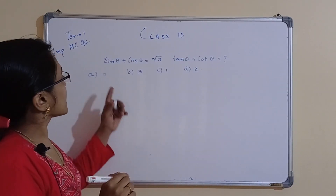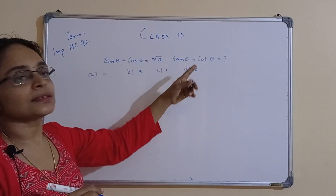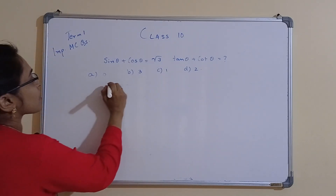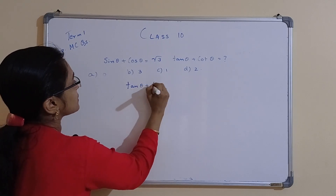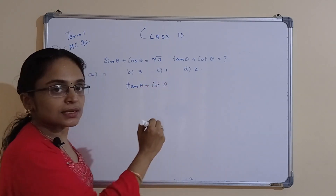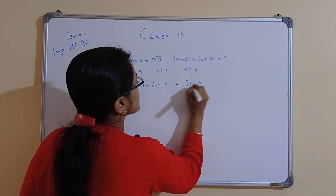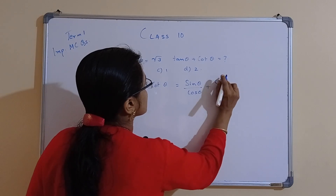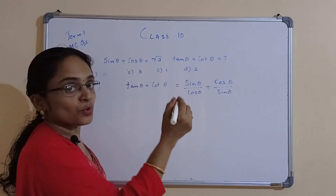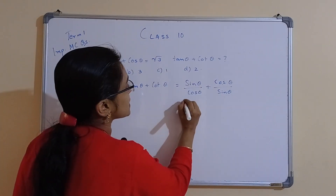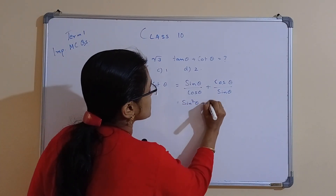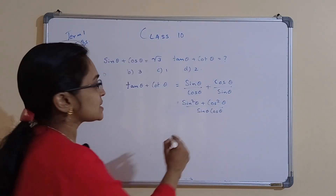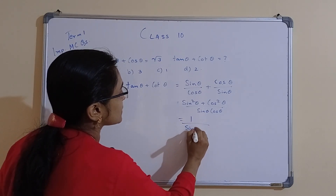Next: if sinθ + cosθ = √3, find tanθ + cotθ. We can write tanθ + cotθ = sinθ/cosθ + cosθ/sinθ. Taking the LCM, this becomes (sin²θ + cos²θ) / (sinθ cosθ) = 1 / (sinθ cosθ).